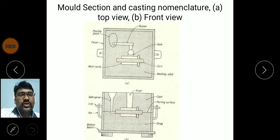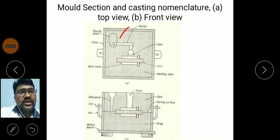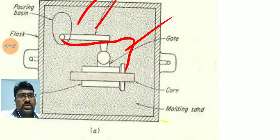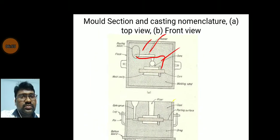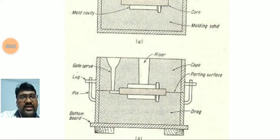These are the front view and top view of the molding board. In the top view we can clearly observe the pouring basin, the runner, and the gate. Whenever we pour the molten metal, it reaches from the runner through the gate to the mold cavity. The core is used for making hollow objects. The front view shows drag box, co-box, parting surface, riser, gate, sprue pin, and gate — these are the different elements in the casting process.